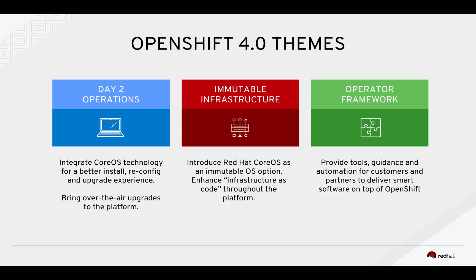OpenShift 4.0 is a re-architecture of OpenShift to support ongoing management of the cluster — better day two operations. This comes from a lot of the CoreOS technology, all about having a better installation, reconfiguration, and upgrade experience. Ultimately, it's going to bring over-the-air upgrades to OpenShift. A lot of this is powered by a new set of immutable infrastructure and a new operating system from Red Hat called Red Hat CoreOS.